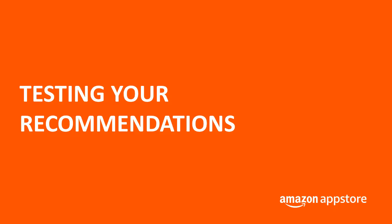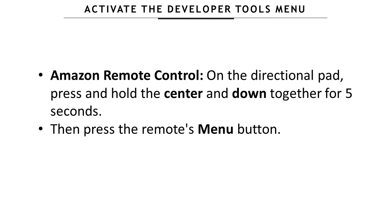Now let's see how you can test your recommendations. In order to do this, we first need to activate the developer tools menu. Just take the Amazon remote control, and on the directional pad, press and hold the center and down buttons together for five seconds. Then press the remote menu button.